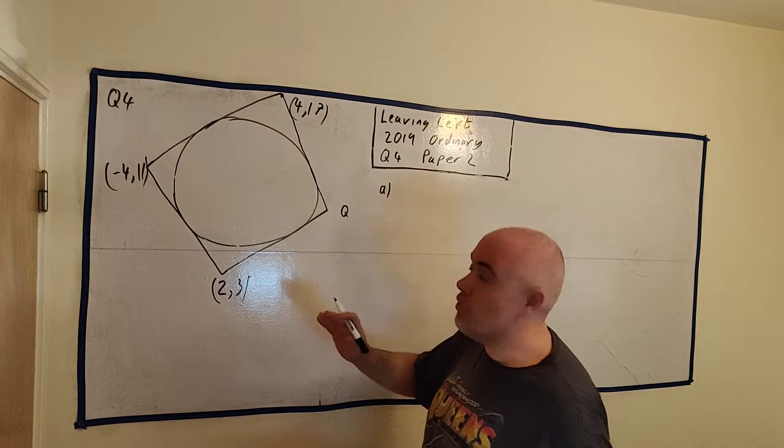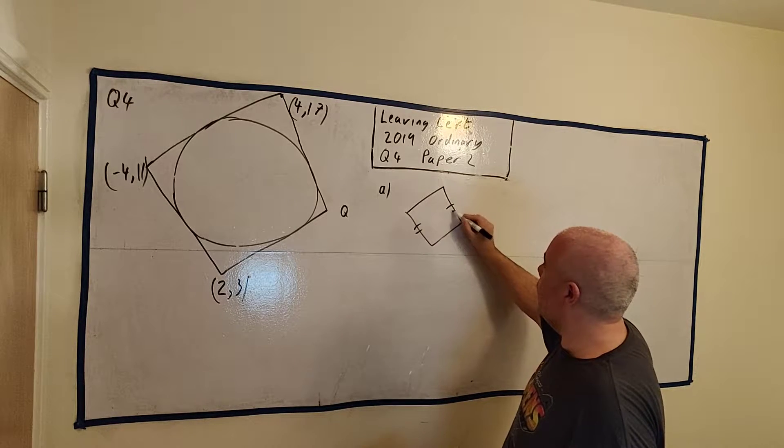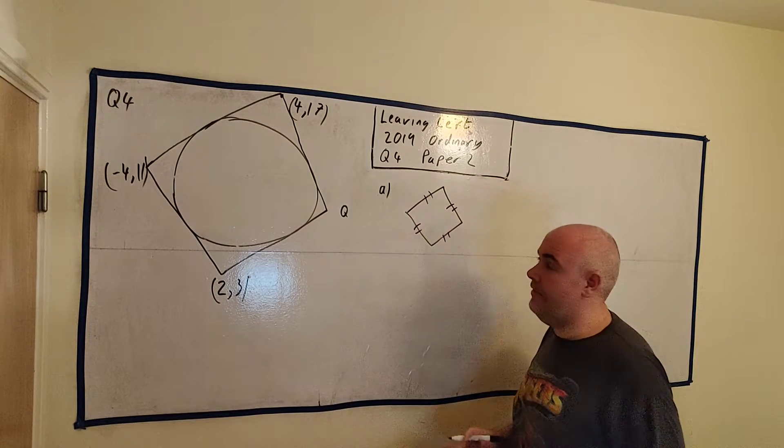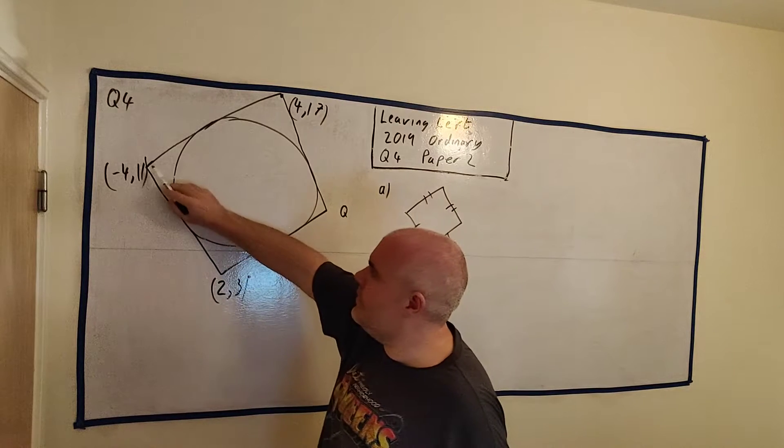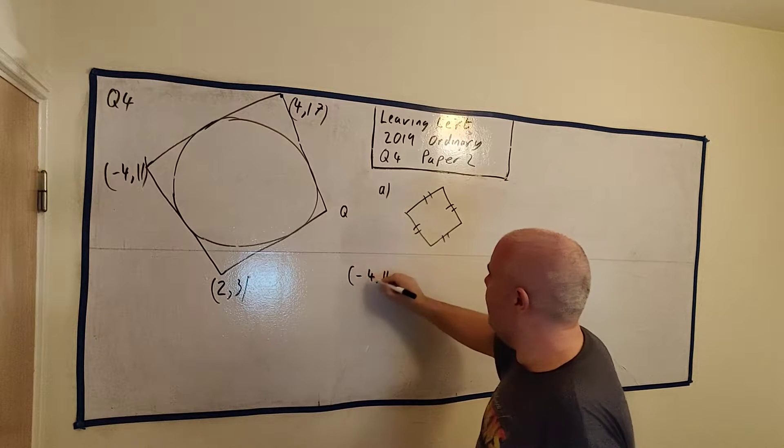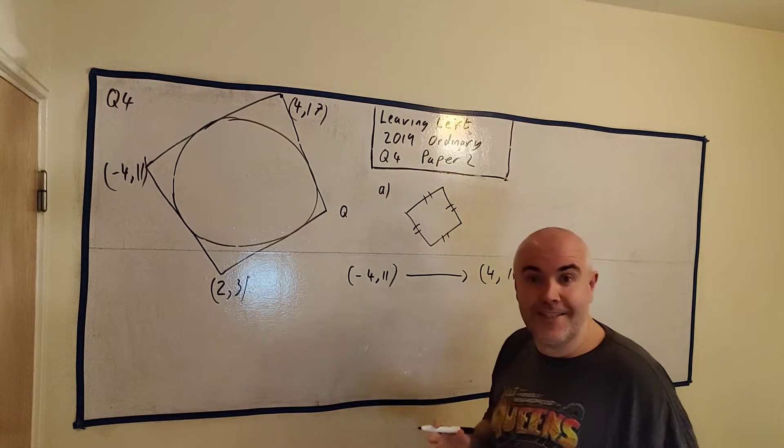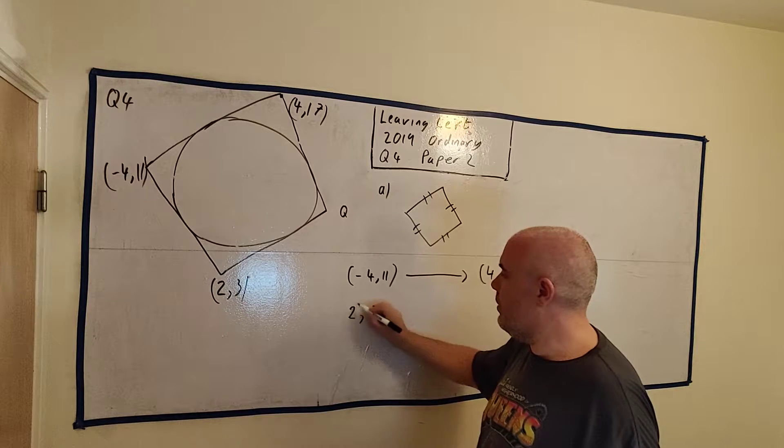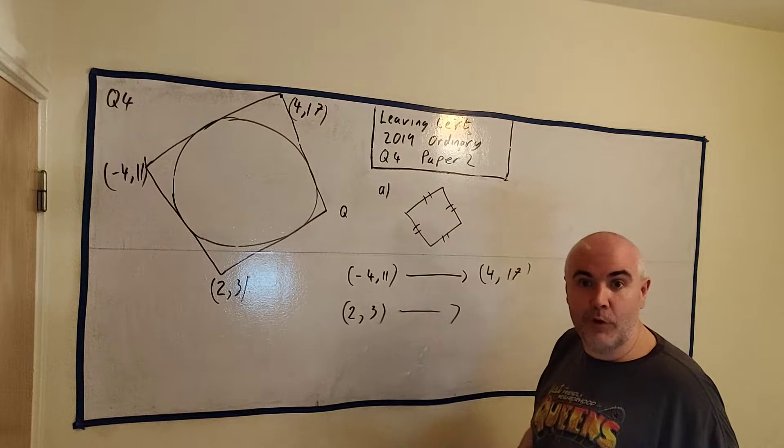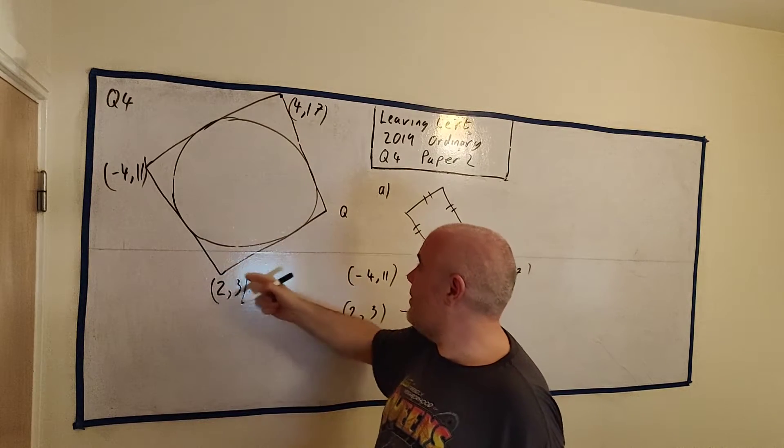We think about the square and how the square is actually a parallelogram. So a square is just a parallelogram where all sides are equal. All of these are parallel. This is going the same angle, but it's also the same length. Why that's important is to get from this point to this point - minus 4, 11 to 4, 17 - must be the same way 2, 3 gets all the way to Q. So this must go the same path, same direction, same length. It must move the same X and the same Y.